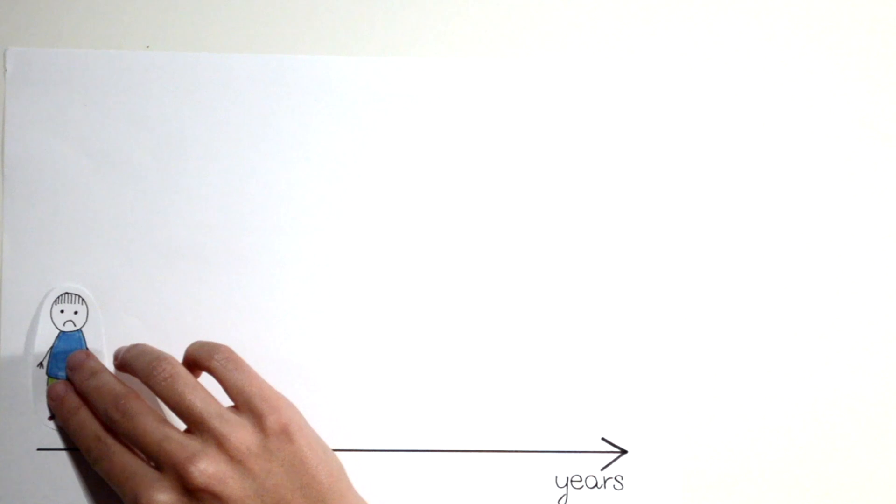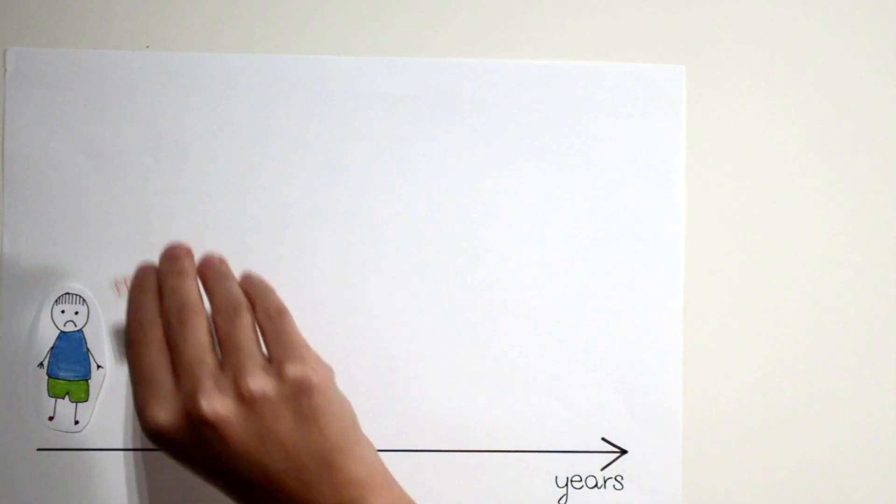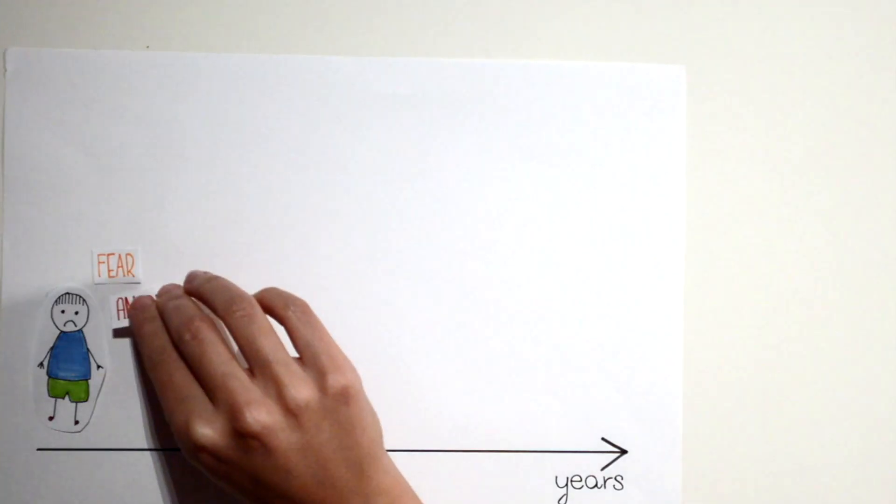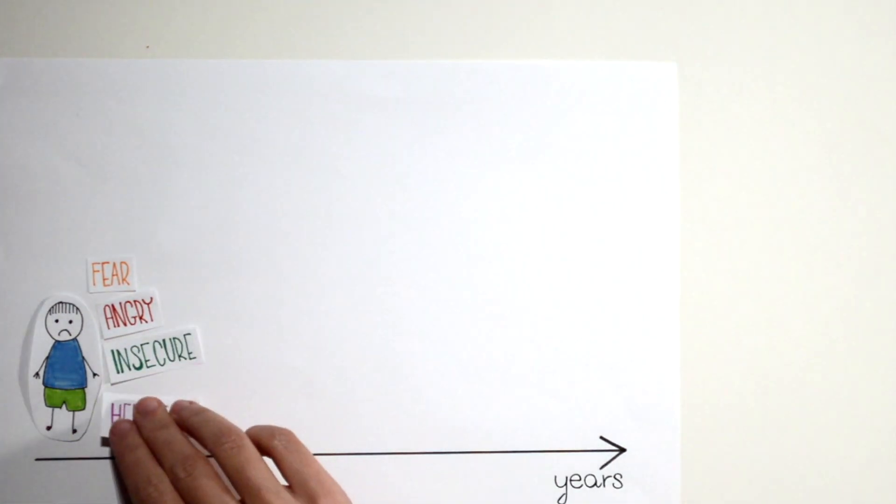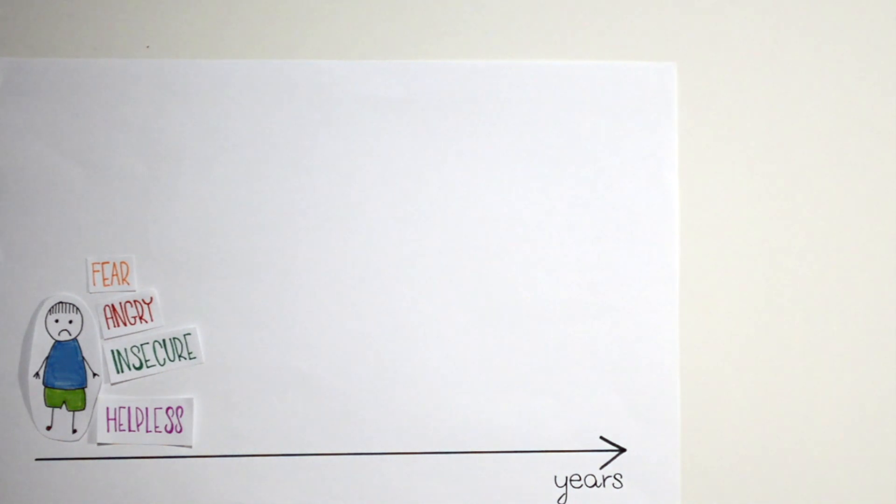Jacob also had a traumatic event in childhood. He also feels afraid, angry, helpless and insecure. He doesn't always understand why things are as they are. Jacob creates a lot of imaginary companions in order to elaborate all these bad feelings and thoughts.